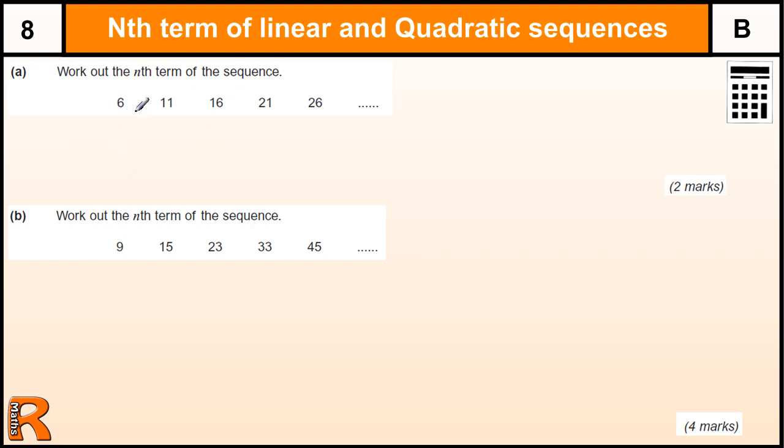But for any sequence we're trying to find the nth term, we start off by just looking at the differences between the numbers. Now if the number you get when you find the difference between the values in the sequence is the same each time, that's what we call a linear sequence because it goes up by the same each time. Now that number is what this sequence is based on, so it's the 5 times table.